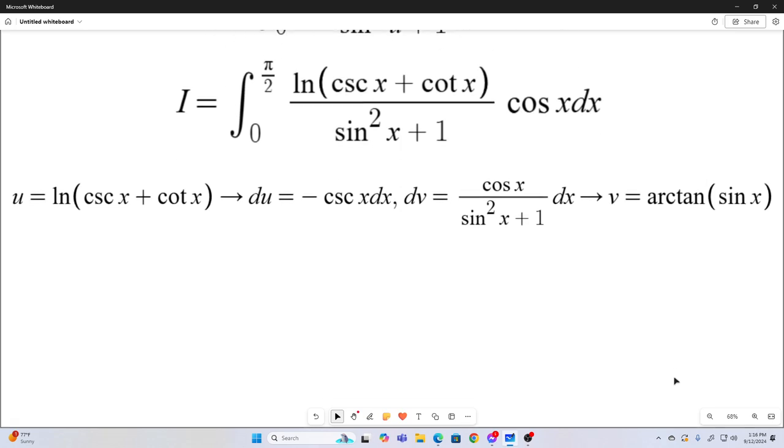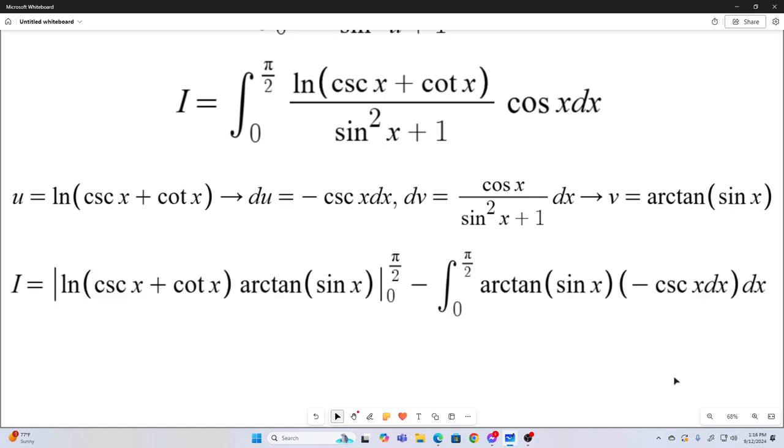So applying the integration by parts formula, we get that our integral is equal to u times v evaluated at the bounds. And by the way, these bounds will, if you let x approach pi over 2 on this function right here, it goes to 0.